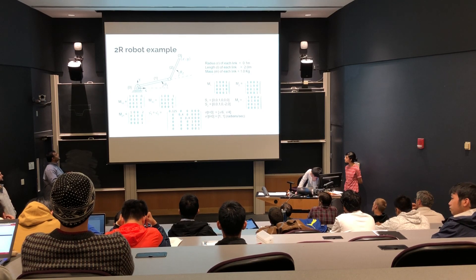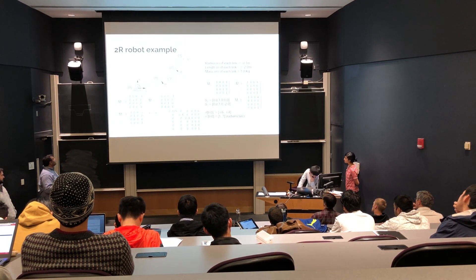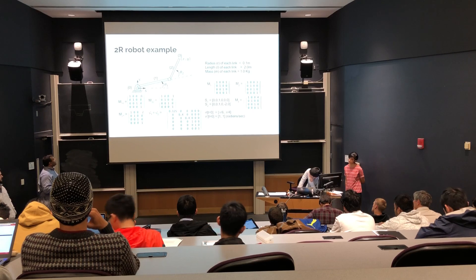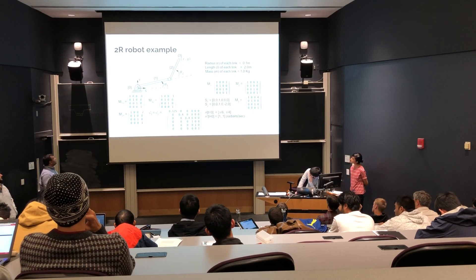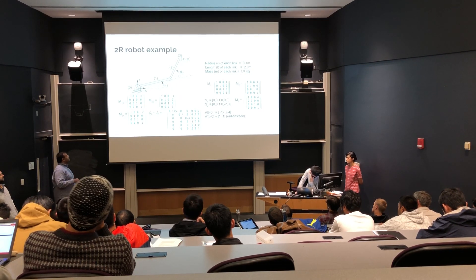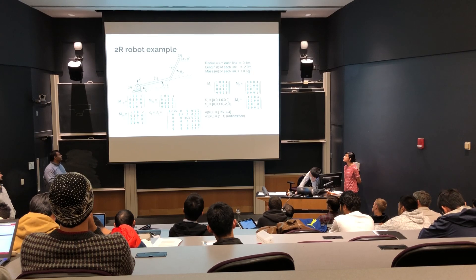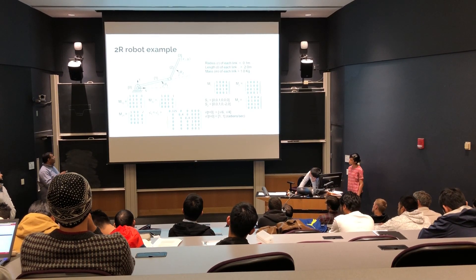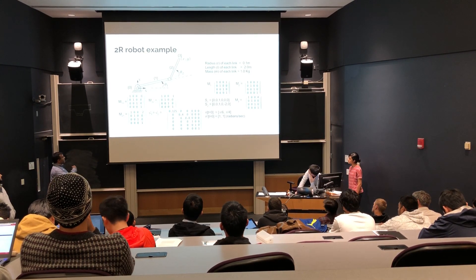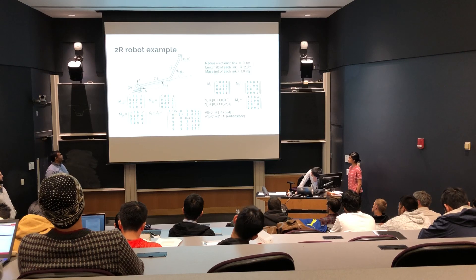Frame zero is the base frame, and frame three is the end-effector frame. You also need the other set of matrices M1,0, M2,1, and M3,2, which are the configurations of each frame with respect to the previous frame — so you're looking backward. The modern robotics library can also utilize the inverse, meaning M1,2, M0,1, M2,3. Additionally, you need the spatial inertia matrices G1 and G2, which are equal in this case.